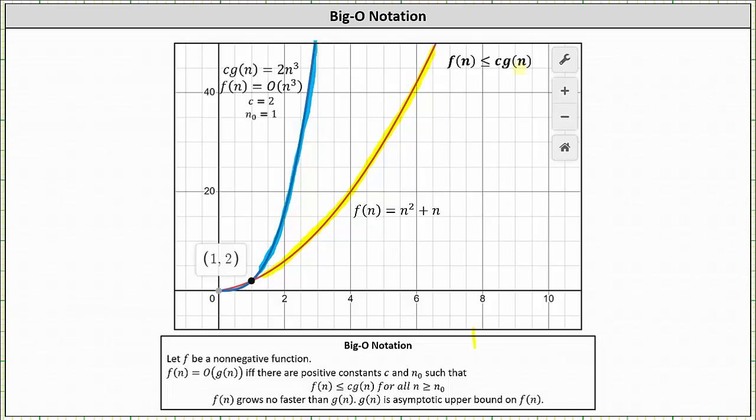Notice f(n) is less than or equal to c times g(n) for n greater than or equal to 1, which does indicate f(n) is Big-O of n³ for c equals 2 and n₀ equal to 1. We can also say f(n) grows no faster than g(n) equals n³, and g(n) is an asymptotic upper bound of f(n).